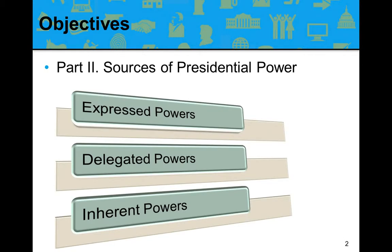We talked about express powers last time. Remember, delegated powers are those powers that Congress gives to the president to carry out the laws. These are normally associated with legislation that is passed, so that the president has the power to carry out — for example — No Child Left Behind. Congress passes a law dealing with education, and it's the executive branch's responsibility to make sure those laws are carried out.